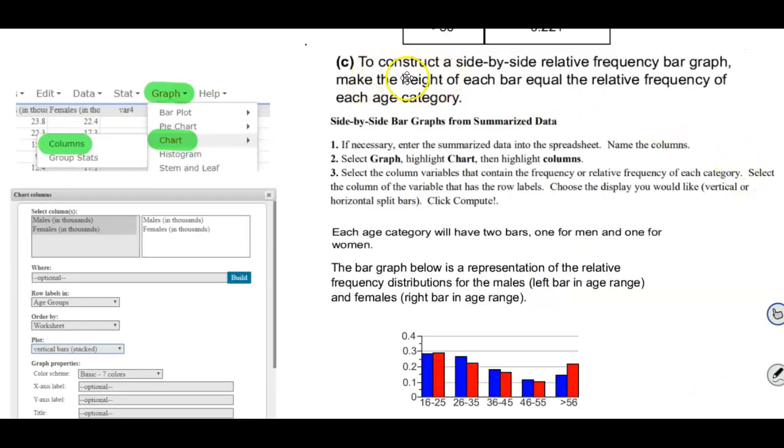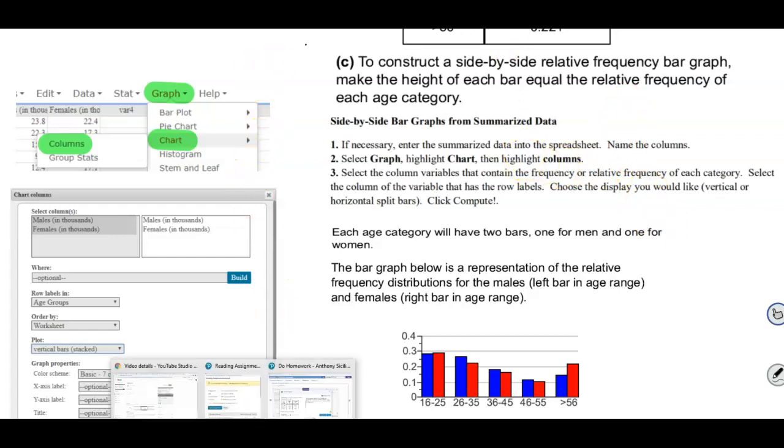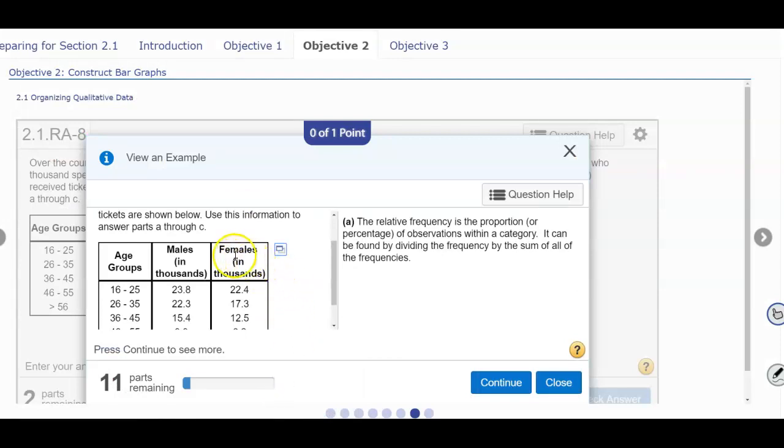Okay now for part C we want to construct a side-by-side relative frequency bar and make the height of each bar equal the relative frequency of each category. So we're going to open up the assignment. I'm going to click to copy the table at the top right so we can open it in StatCrunch. So I'm going to open up in StatCrunch.